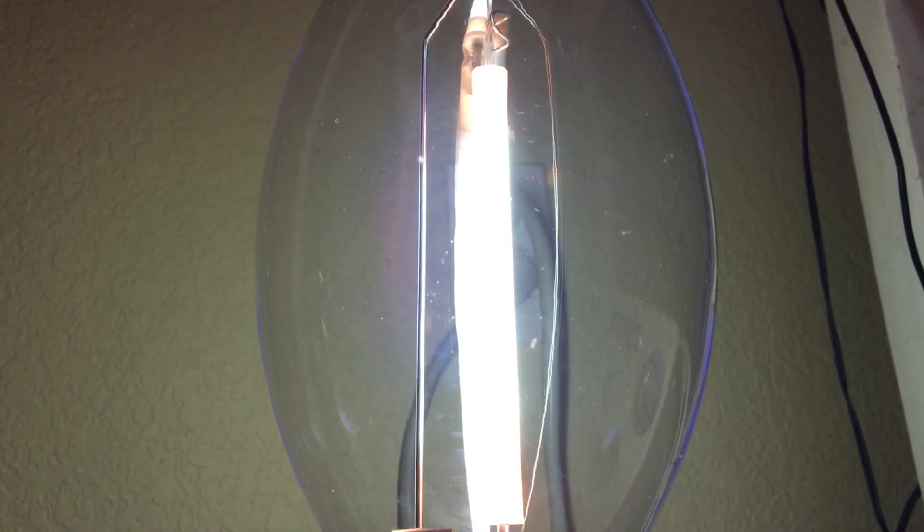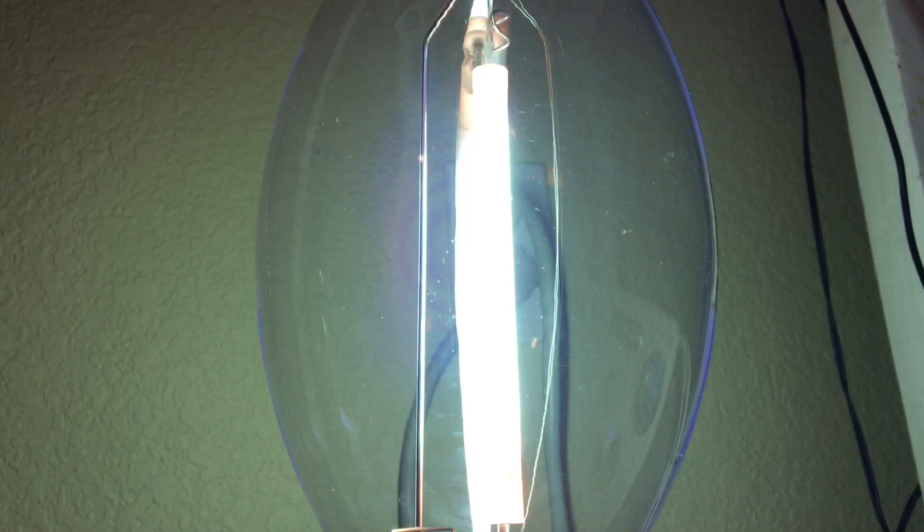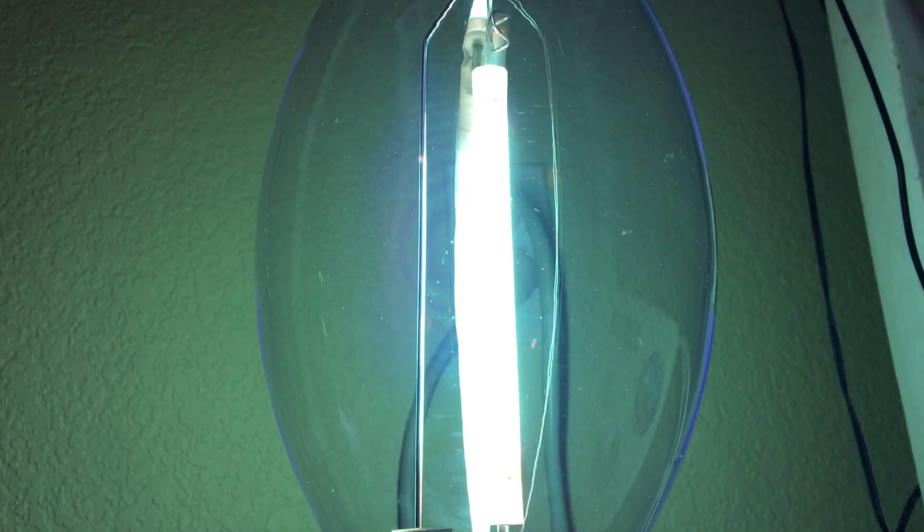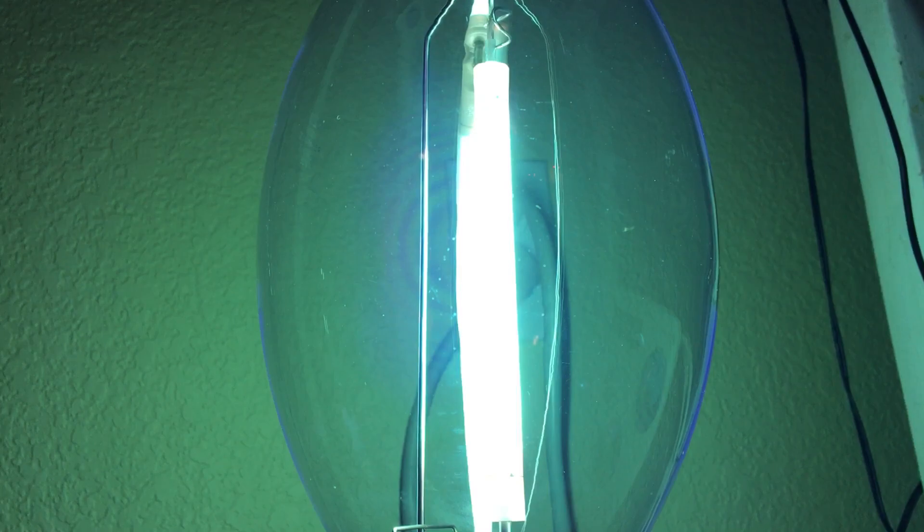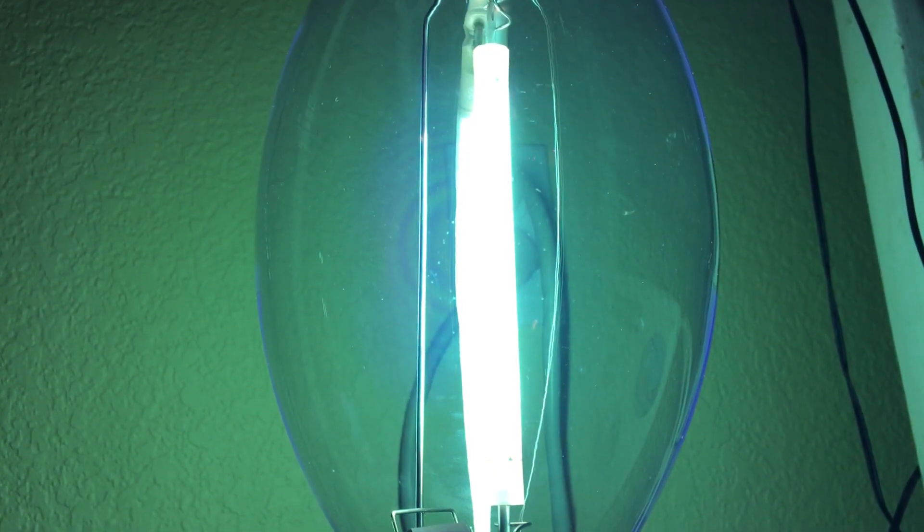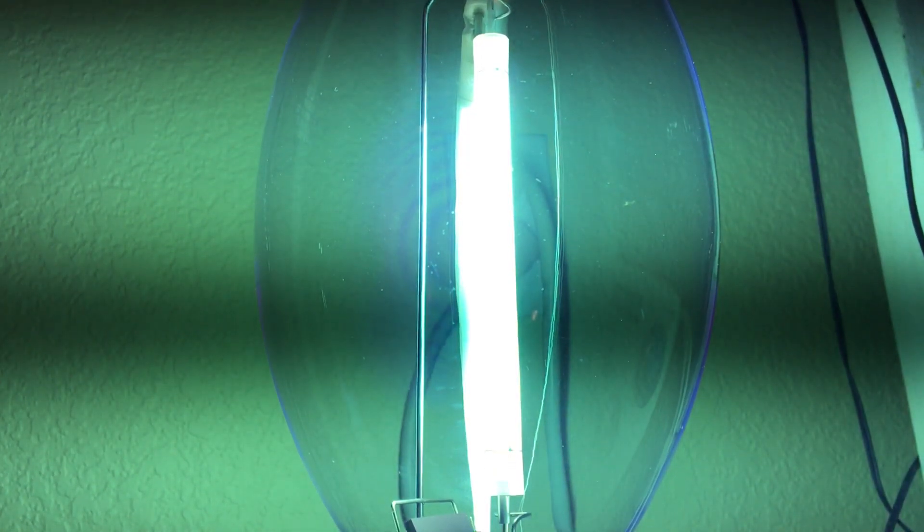And I also forgot to mention that I said that there was more mercury in the arc tube. There actually is not. It's the same amount, but it's a different starting gas, which is actually argon. Normally high-pressure sodium bulbs use xenon gas. And that's why it gives off the mercury vapor color.